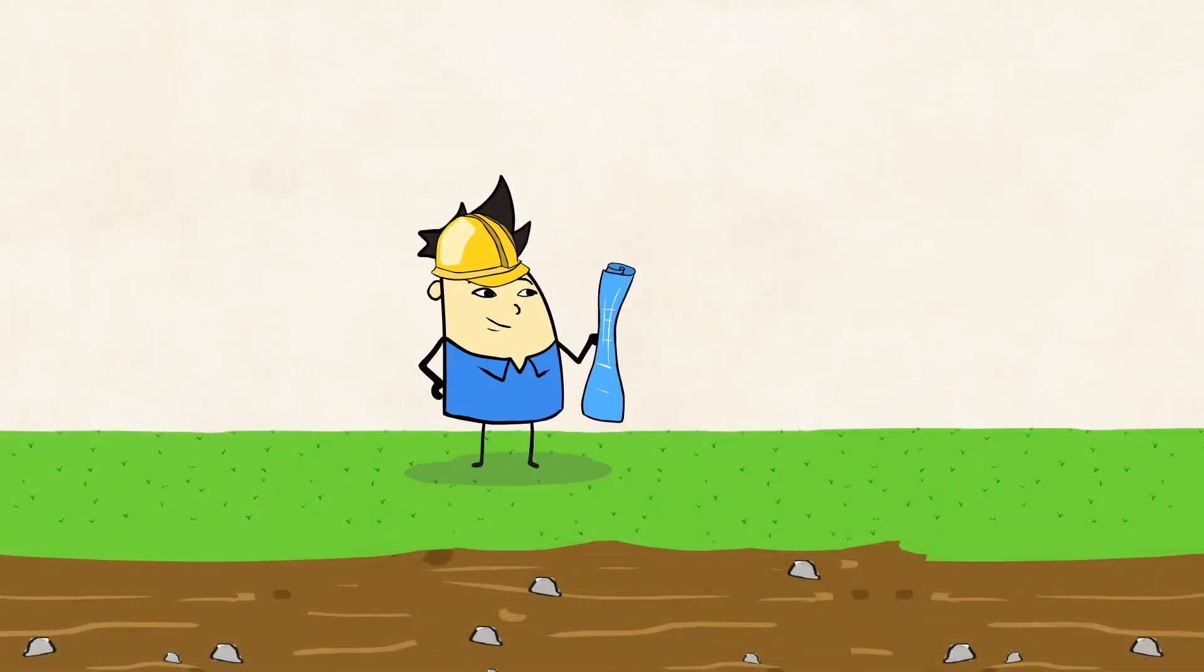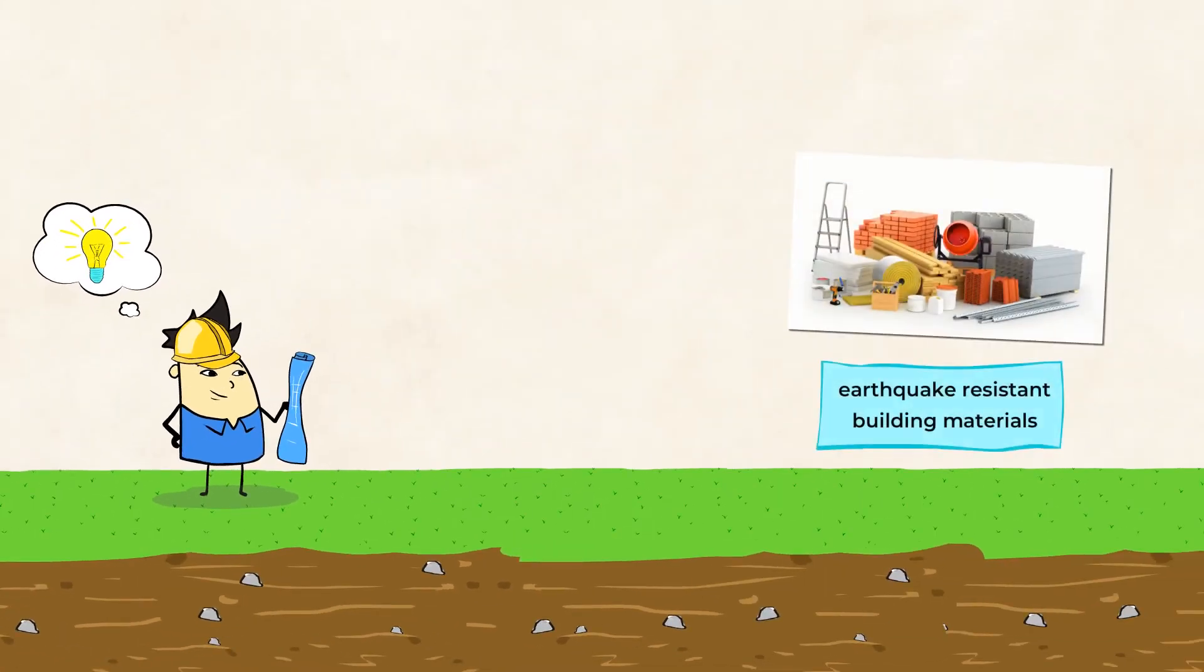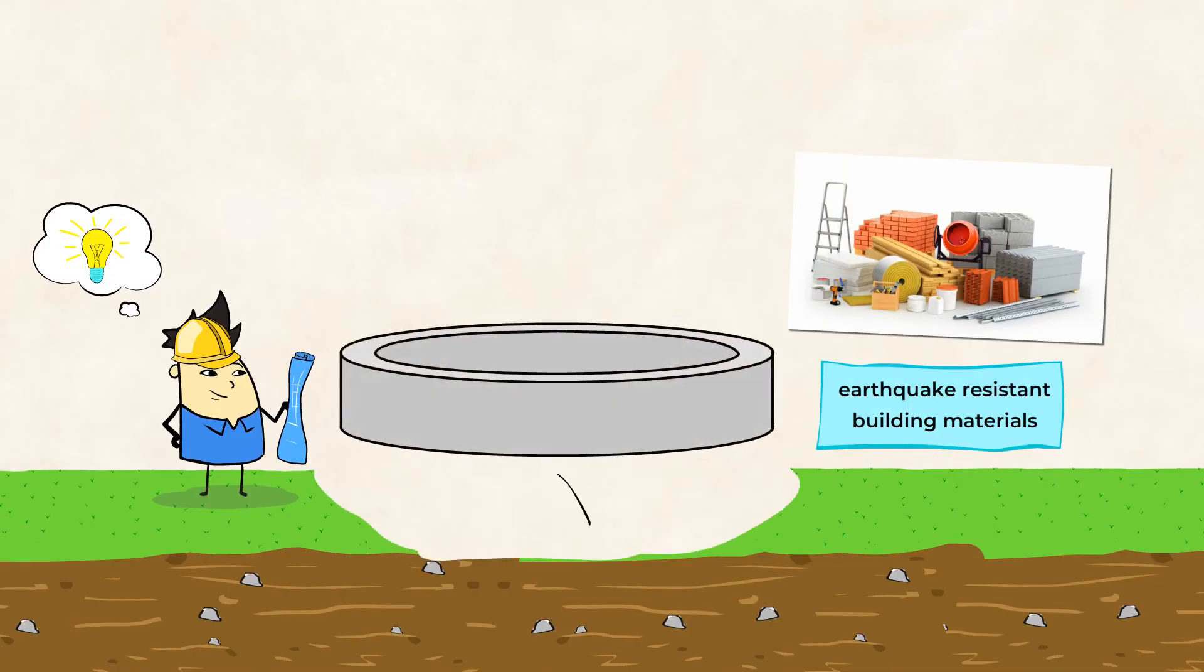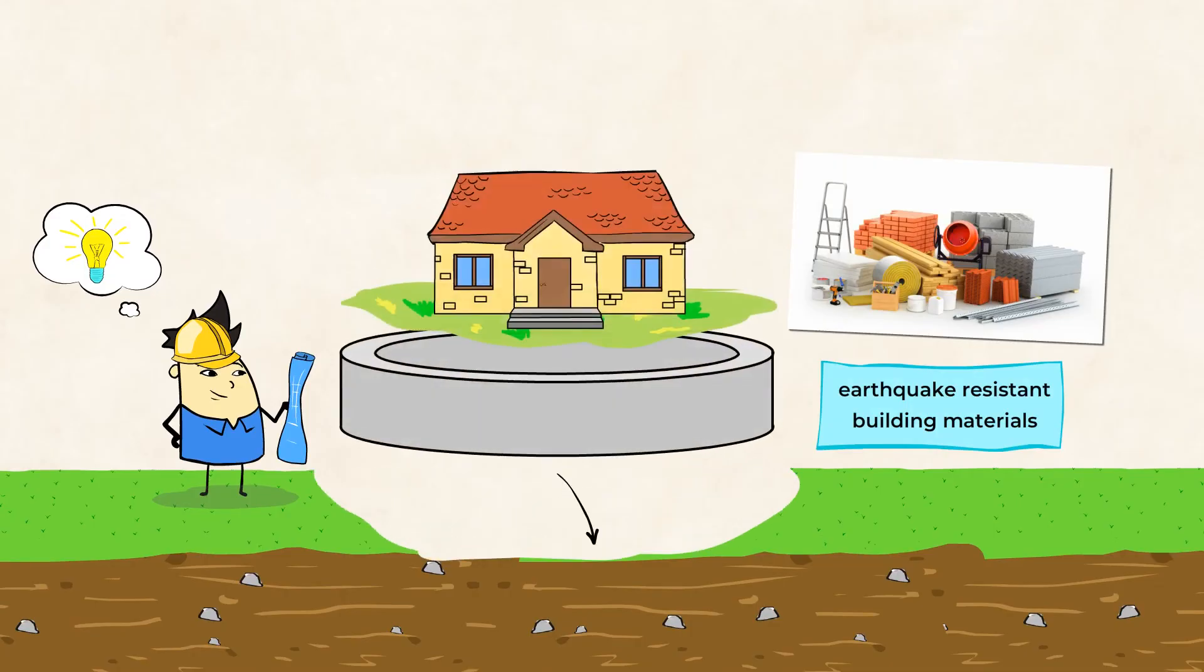There are many other solutions that engineer teams are working on, such as using different types of building materials or building special rings into the ground around a building that can absorb the vibration of an earthquake. So incredible!